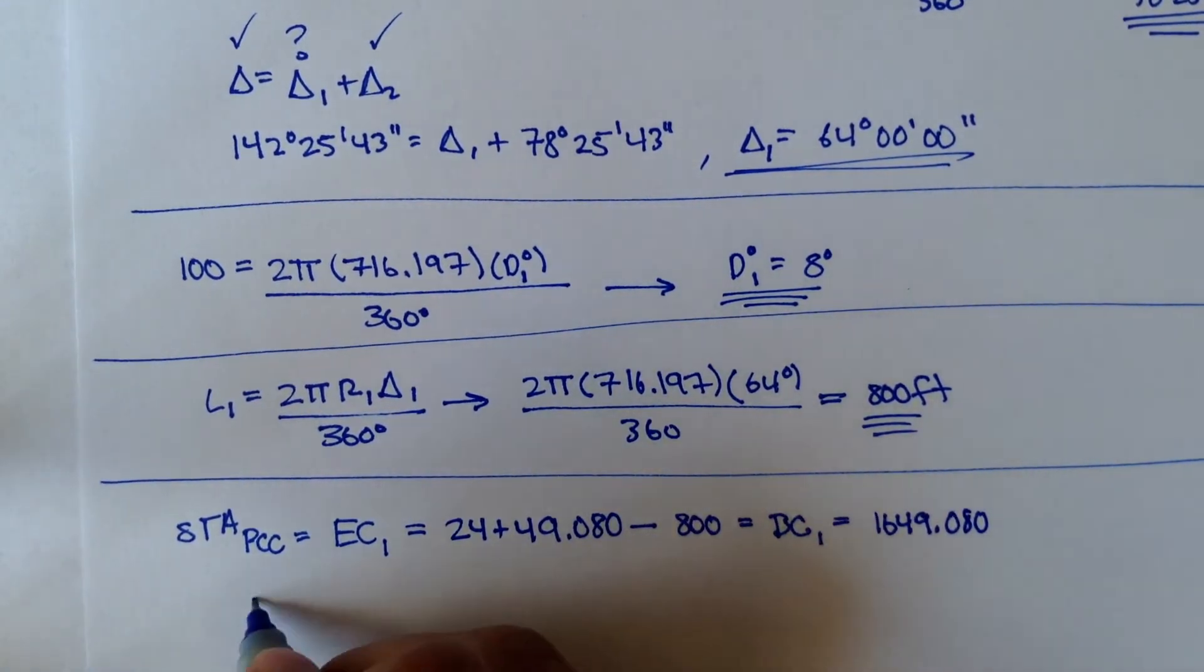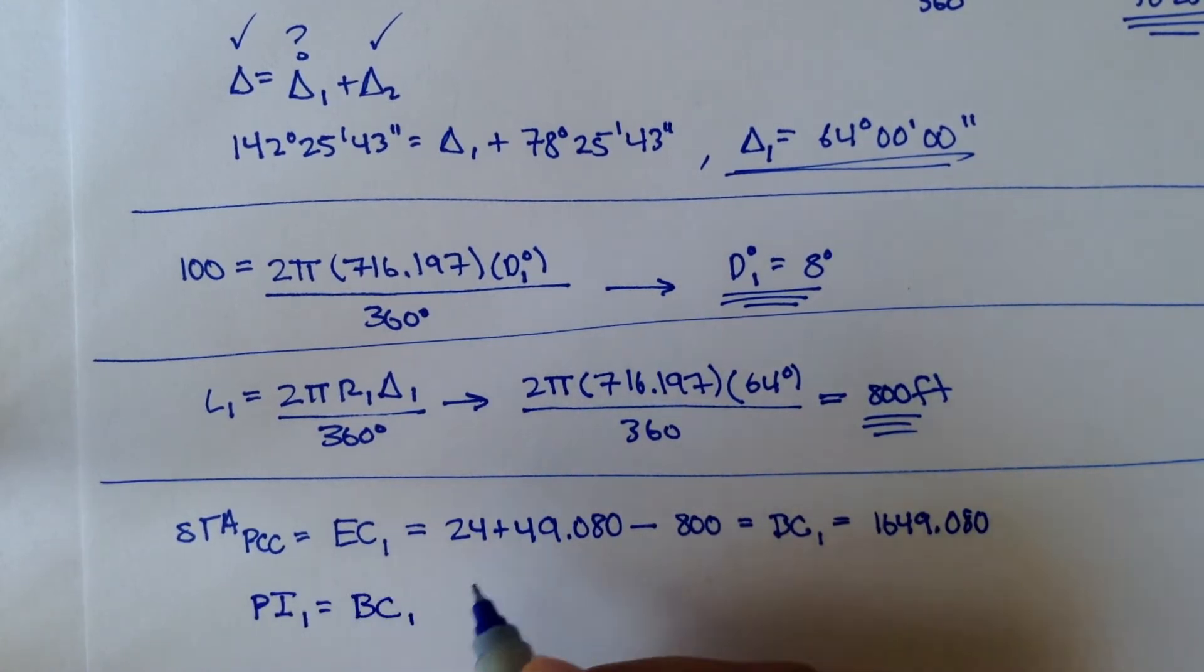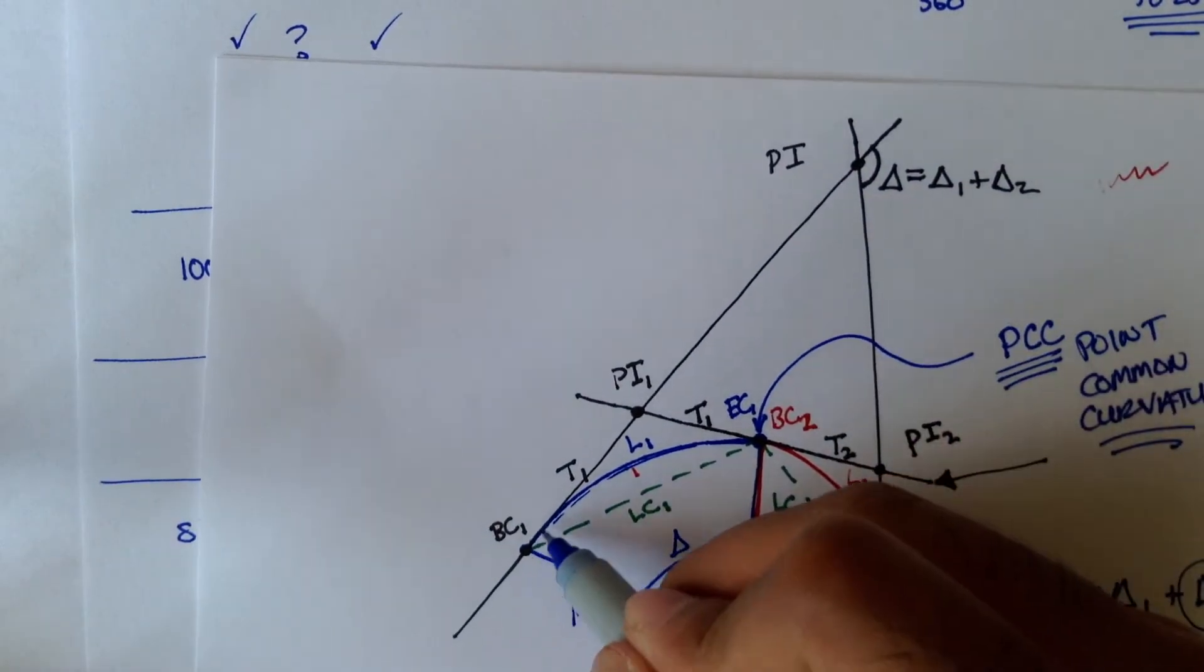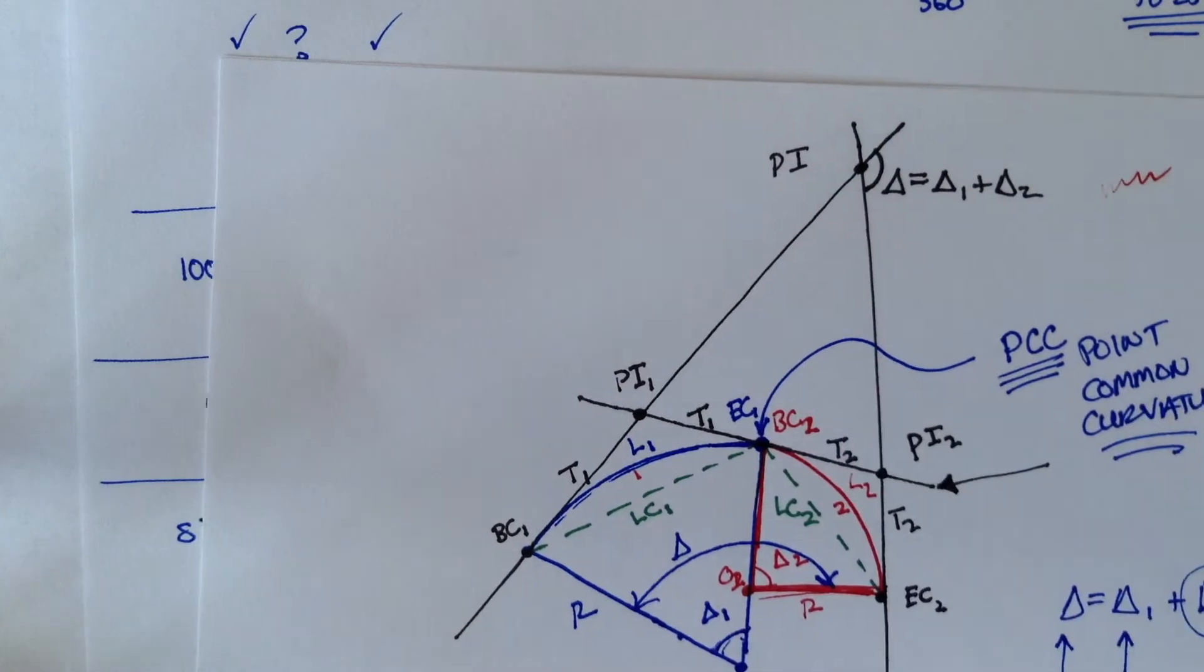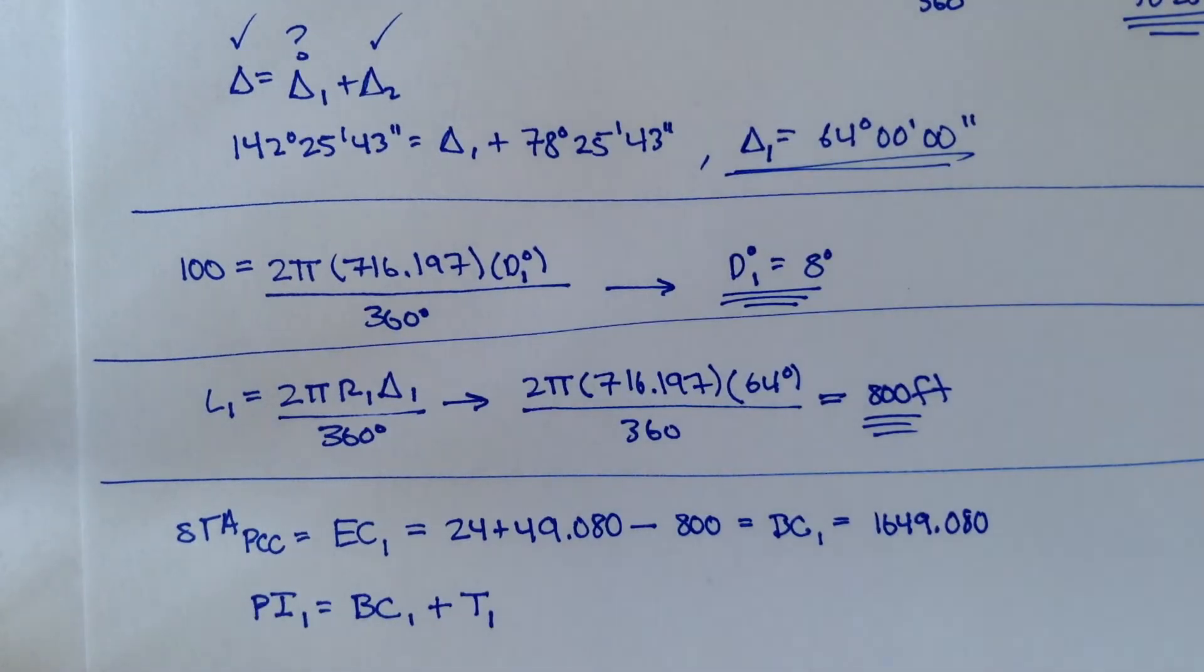And to figure out where point of intersection 1 is, we need to take BC1 and we need to add the tangent distance. Tangent distance is this distance right here. We don't know that yet, but we can figure it out.